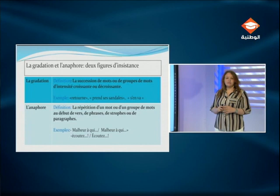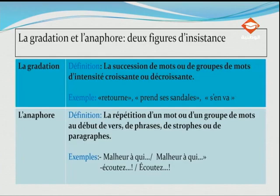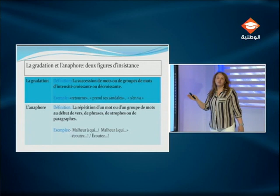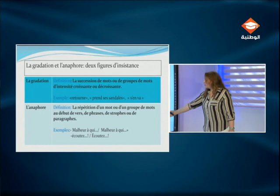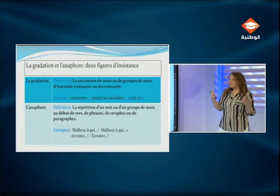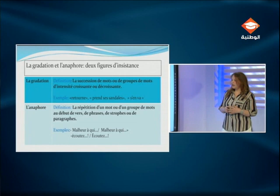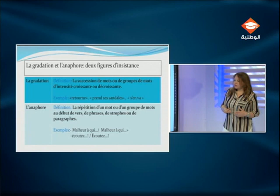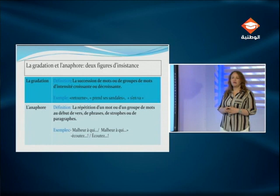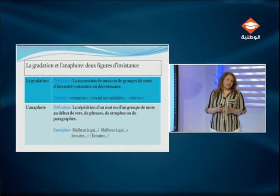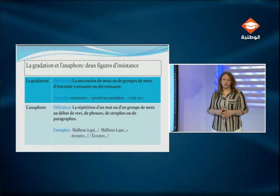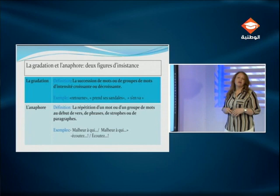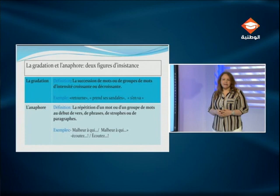L'anaphore, c'est la répétition d'un mot ou d'un groupe de mots au début de vers, de phrases ou de paragraphes — exemple : « Malheur à qui », « Écoutez ». C'est un procédé d'insistance, mais elle peut aussi servir le rythme, créant une certaine cadence. Dans son poème « Liberté », Éluard dit : « Sur mes cahiers d'écoliers, sur mon pupitre et les arbres, sur le sable, sur la neige, j'écris ton nom » — en répétant la préposition « sur », le poète insiste sur l'idée qu'il veut écrire le nom de la liberté partout.